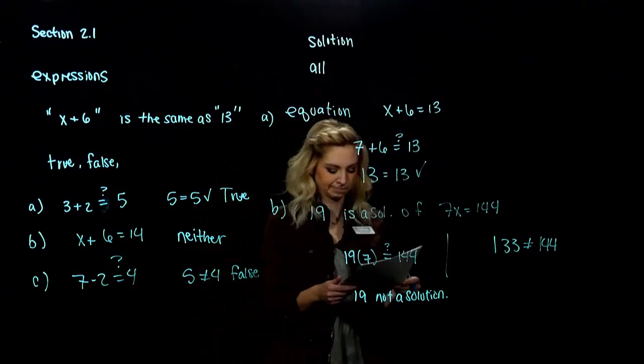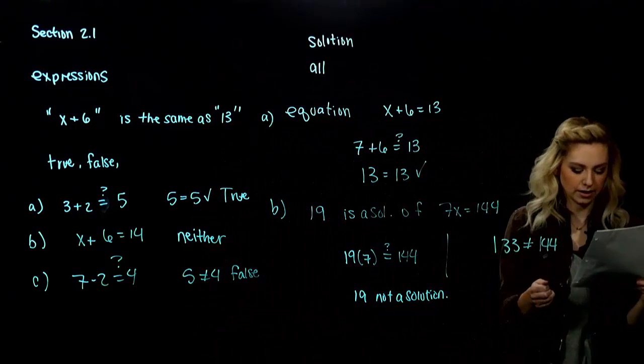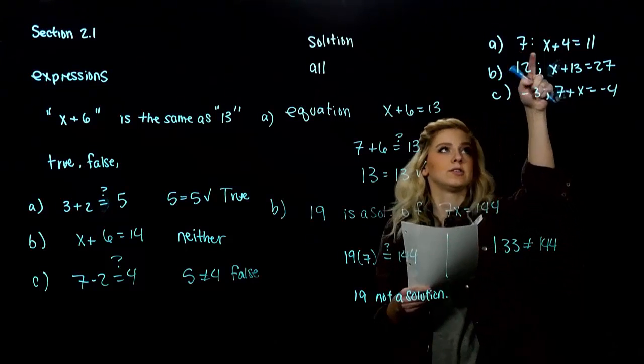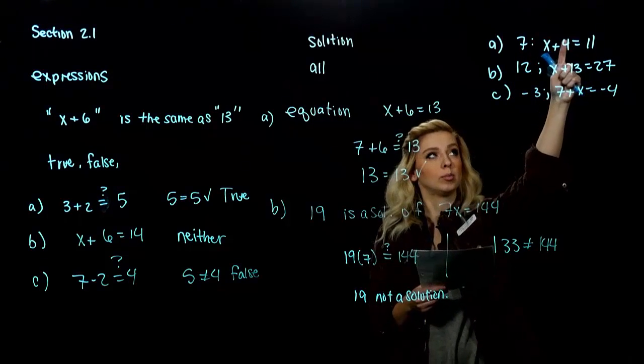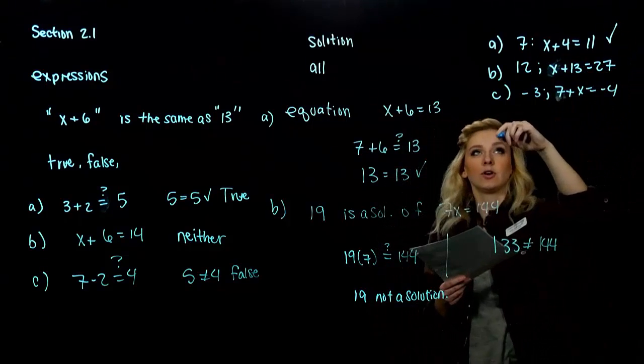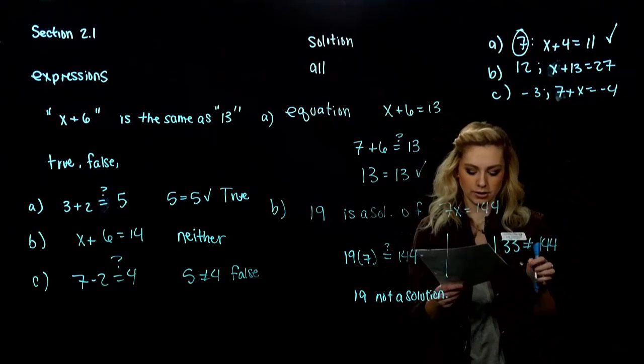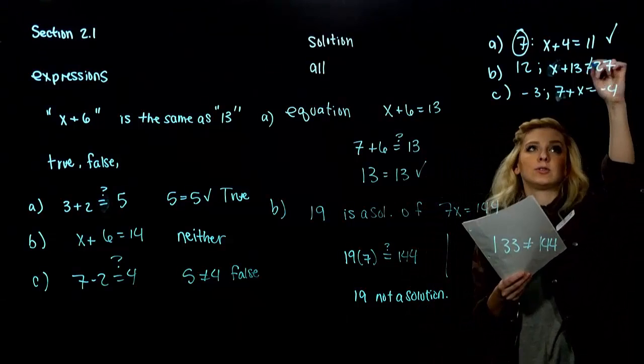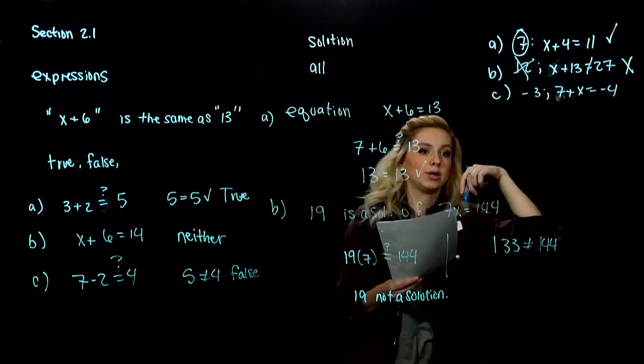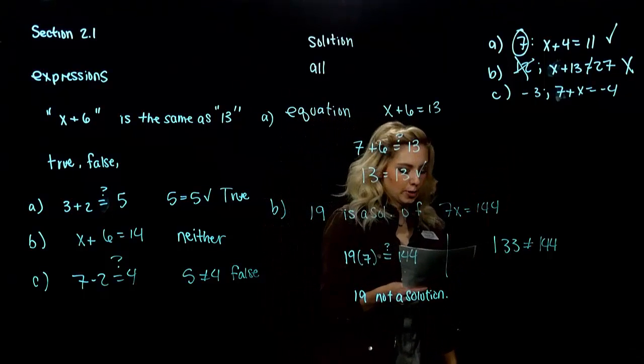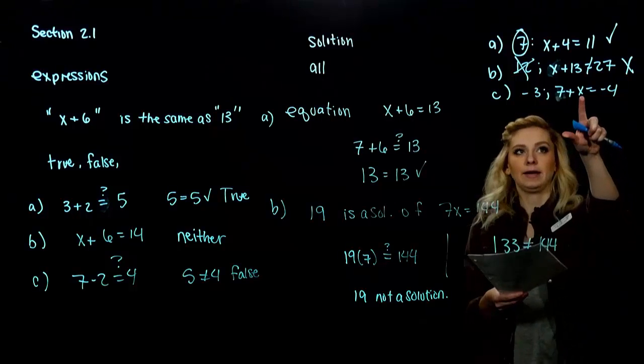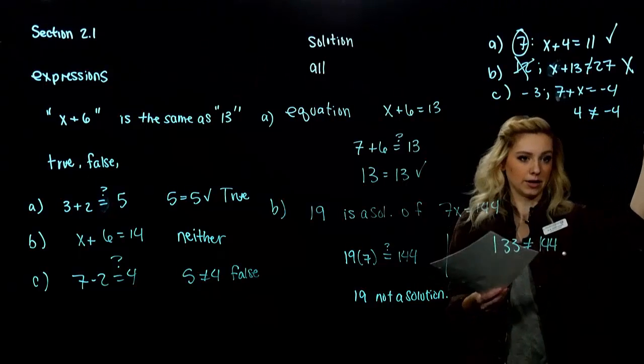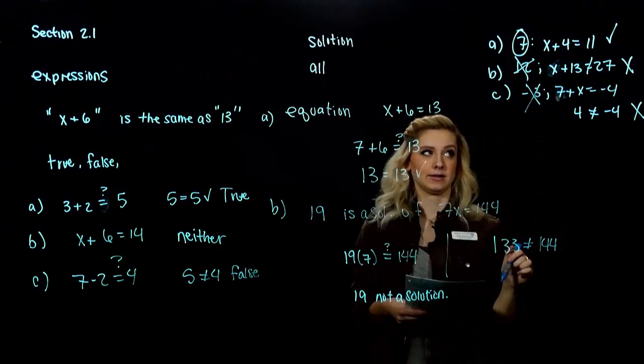But, in our first case, 7 was. Alright. So, 3 for you to try. Determine whether the given number is a solution of the given equations. Alright. So, what were you thinking for that part A? If I plug in 7 to this equation, is 7 plus 4 really equal to 11? It is. It makes it true. So, again, 7 is a solution to that equation. What about for B? If I plug in 12 and I add 13 to it, I'm getting 25. That's not equal to 27. So, in that case, 12 is not a solution to that specific equation. What about for part C? If I plug in a negative 3 for X and evaluate, I have 7 minus 3 will give me a positive 4. Positive 4 is not equal to a negative 4. So, no. In that case, negative 3 is not a solution to that equation.